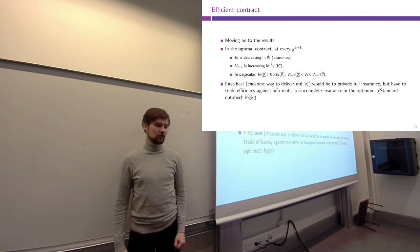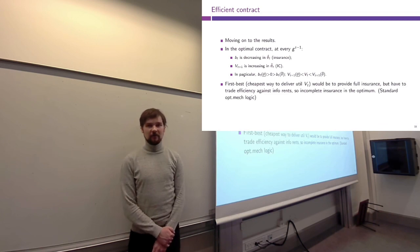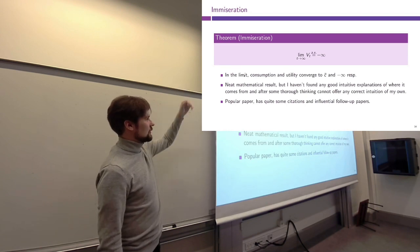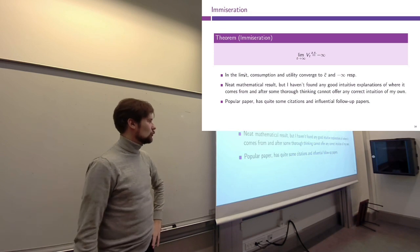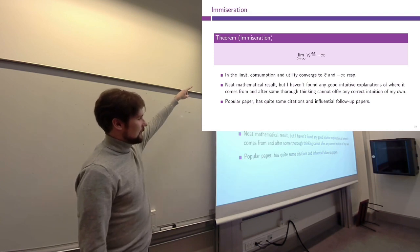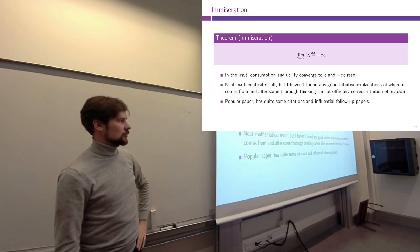This by itself is not the huge result — the more important idea is that the principal can use promises of future utility as an incentive provision instrument. However, the reason I present these three papers is that they are unified by another class of results. In this insurance problem, the theorem proved by the authors is that the optimal contract leads to immiseration: the continuation utility of the agent Vₜ converges to minus infinity almost surely as time continues.